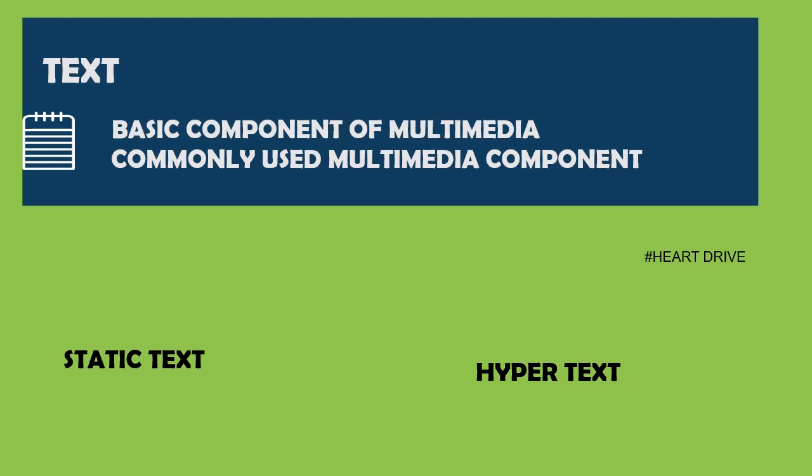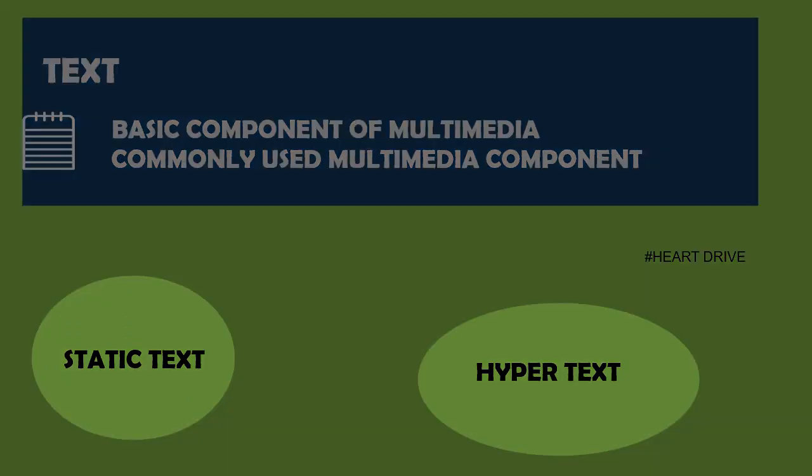First, let's see about text. Text is the basic component of multimedia because everything that you see in a website, a book, or everything is mainly made up of text. It is also the most commonly used multimedia component — you can see it even in advertisements, tele-ads, and everything. Text is of two types: static text and hypertext.